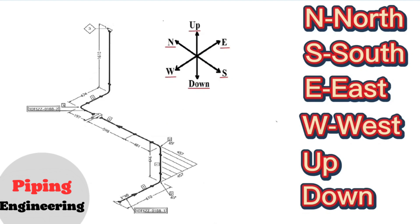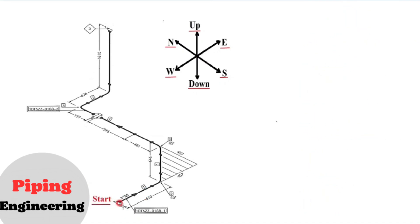By studying these directions we can easily read the pipe isometry. We will start reading the pipe isometric from this point because the direction of the arrow on the pipe drawing is in this direction.